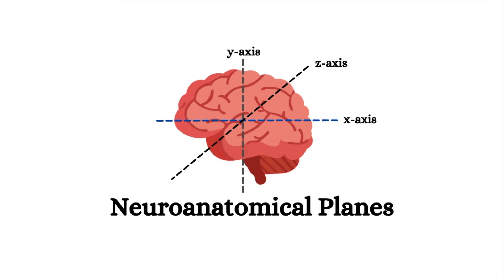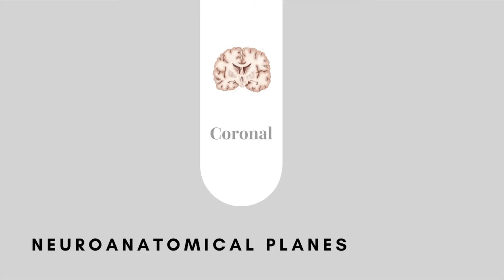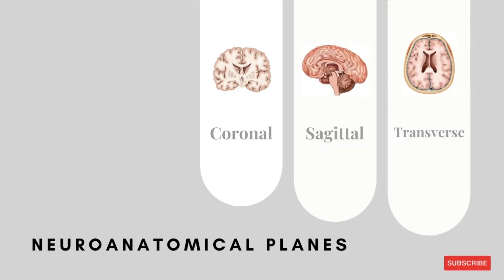Let's now move on to looking at the neuroanatomical planes themselves. There are three key neuroanatomical planes: there's a coronal plane, there's a sagittal plane, and there is a transverse plane.